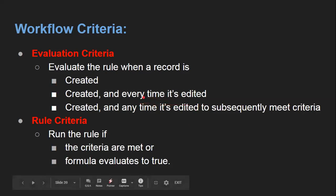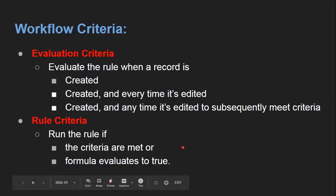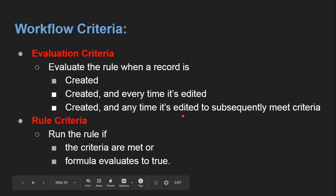You might be thinking: what is the difference between 'created and every time it's edited' and 'created and every time it's edited to subsequently meet criteria'? In the case of 'created and every time it's edited', if you are editing your record and your rule criteria is matching or formula is evaluating to true, then only your workflow rule will be executed. I am also going to demonstrate these differences in demonstration videos, so you can watch those other videos to understand this practically.